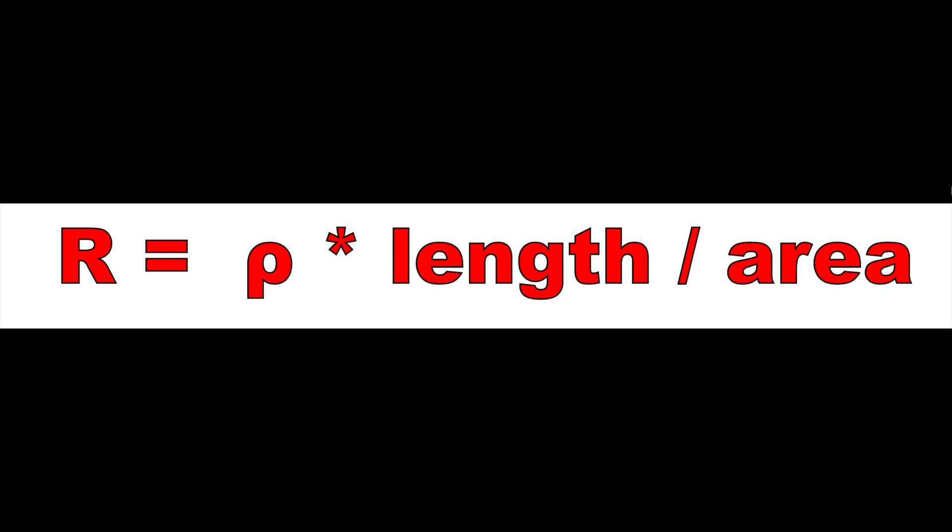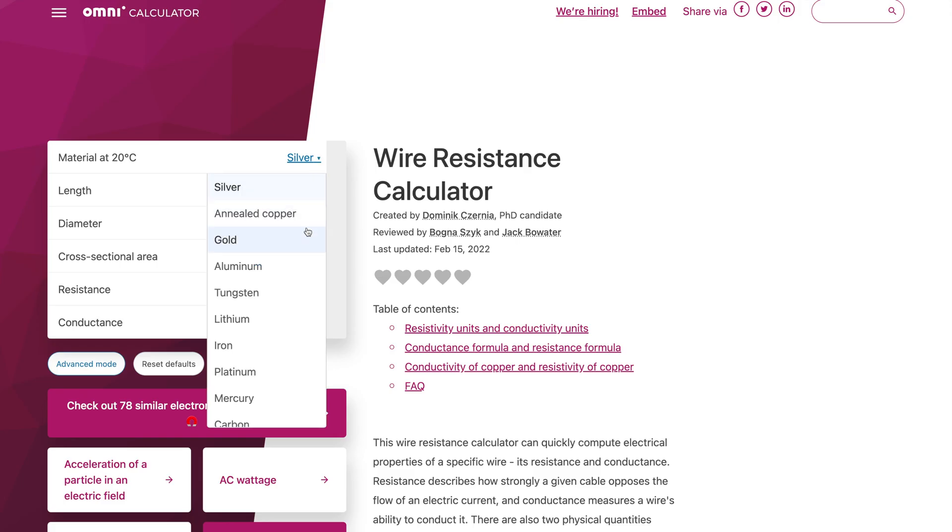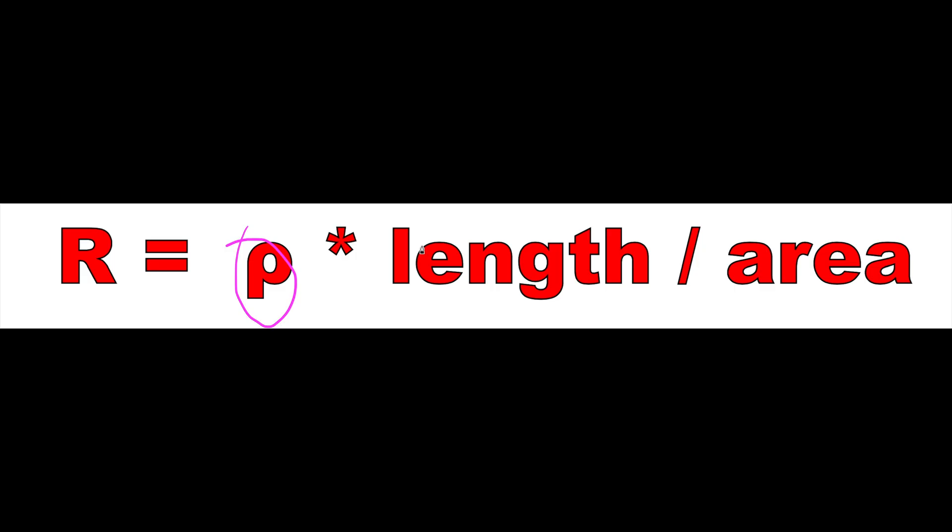In the formula for resistance, resistance equals ρ times length divided by area. ρ, or resistivity, depends on the type of conductor used, which is why this calculator allows us to choose the material. Now for a given material with a constant length,